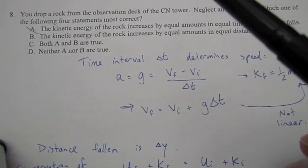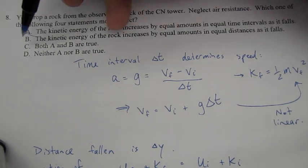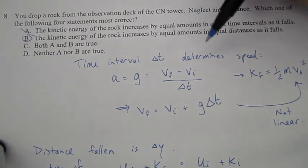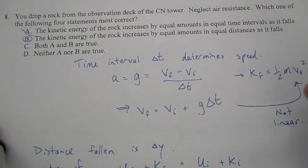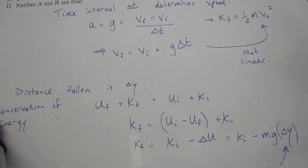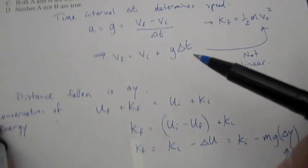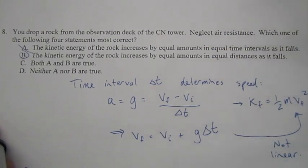So that's exactly what's being said here with the kinetic energy of the rock. It increases by equal amounts in equal distances. So as delta Y will be related linearly with kinetic energy. So the answer is B.